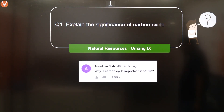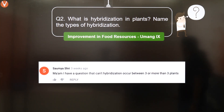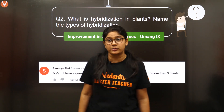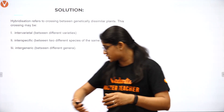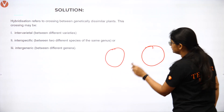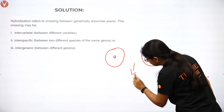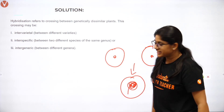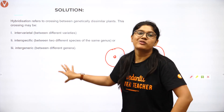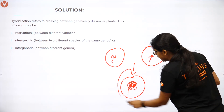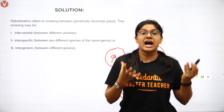Let's see question number 2. The question is: What is hybridization in plants? Name the types of hybridization. Hybridization is nothing but the mixing — genetically — of two different characteristic features to make a new one. What we are actually doing is taking the genetic material, mixing them up, and getting a new variety. That is hybridization.